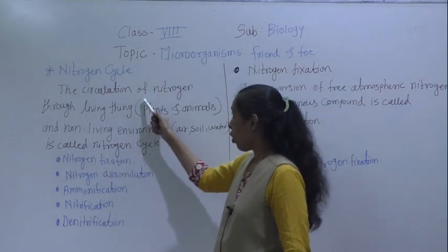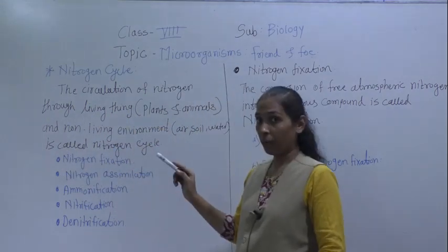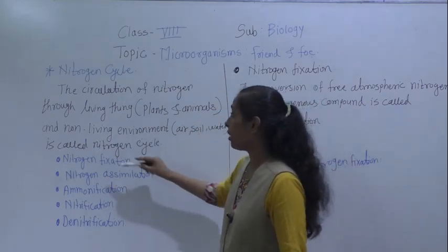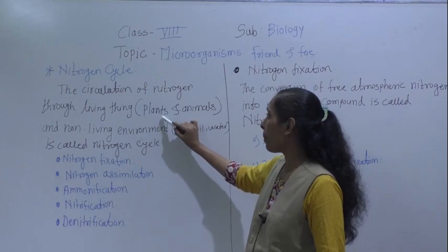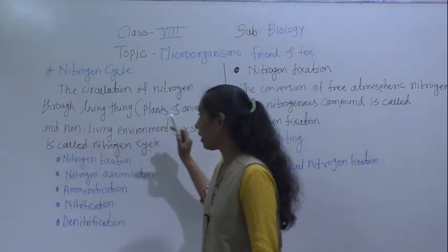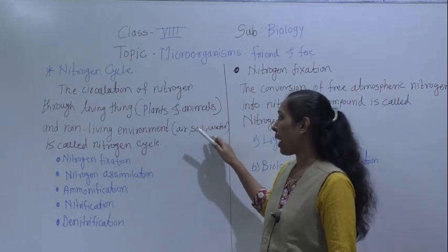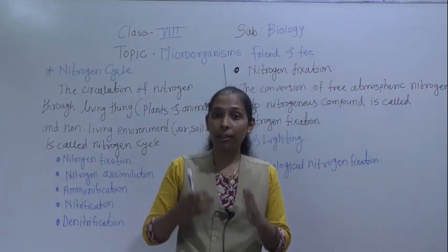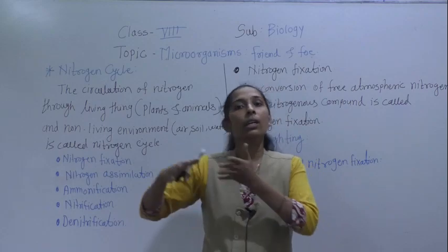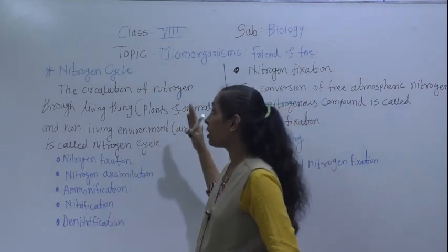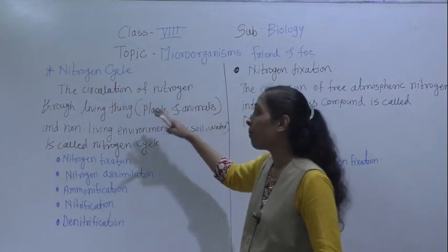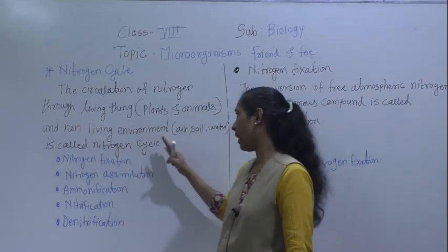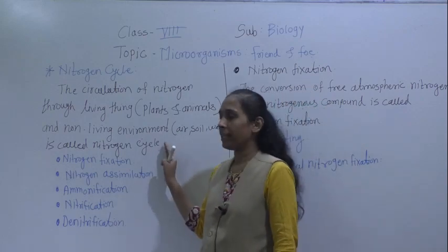The circulation of nitrogen through living things — plants and animals — and non-living environment, that is air, soil, and water, is called the nitrogen cycle. There is a circulation of nitrogen between living things and non-living things like air, soil, and water.